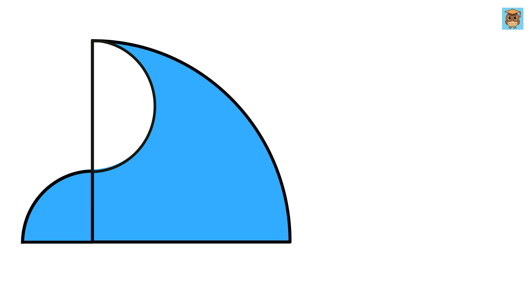Then we also have another small quarter circle which intersects this big quarter circle at this point. Now we are given that this length is 8 units. Our job is to find the area of this blue region.